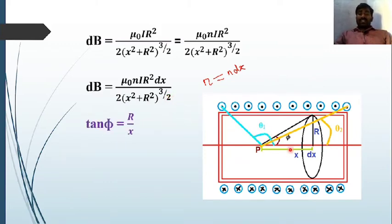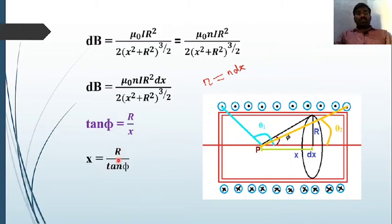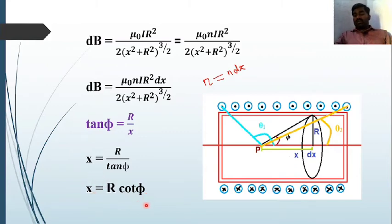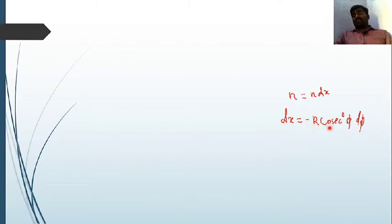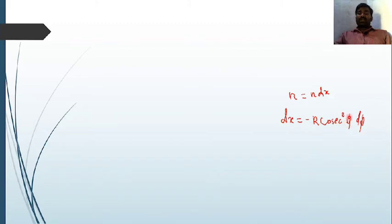To express x in terms of angle φ, we use the relation tanφ = r/x from the triangle, giving x = r/tanφ = r·cotφ. Differentiating x with respect to φ, we get dx = −r·cosec²φ·dφ.